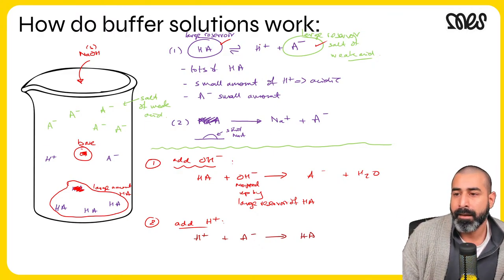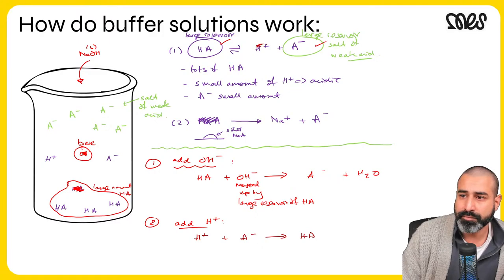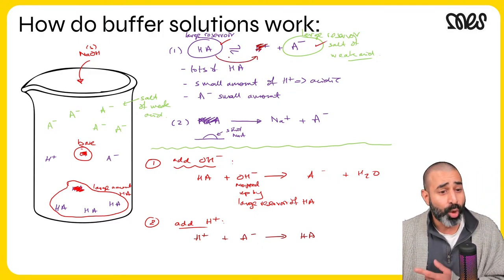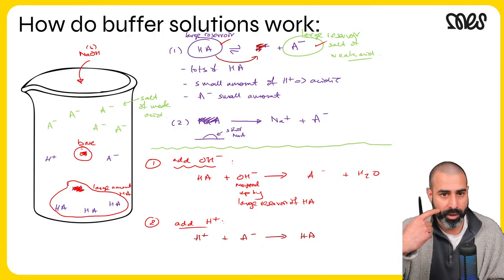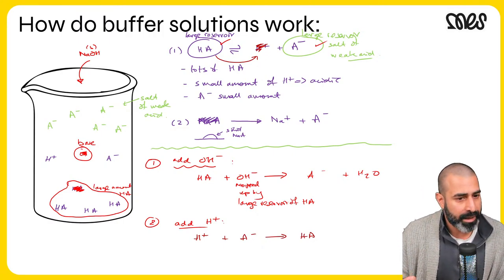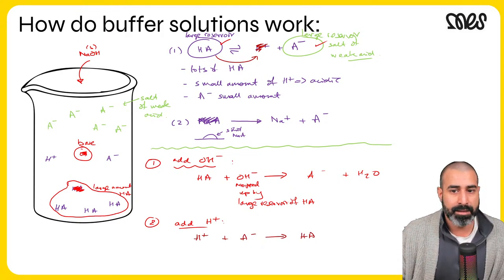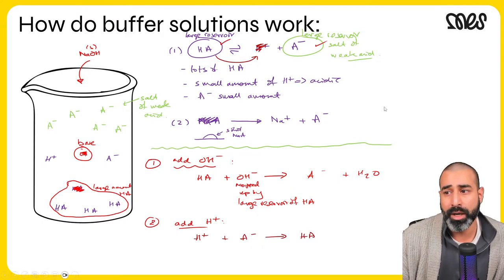Another way to explain it: adding OH⁻ removes H+, and the equilibrium shifts right — HA moves from left to right to restore the H+ that was removed, returning the pH to its original value. Both explanations are valid; statistically the direct reaction with HA is more likely.